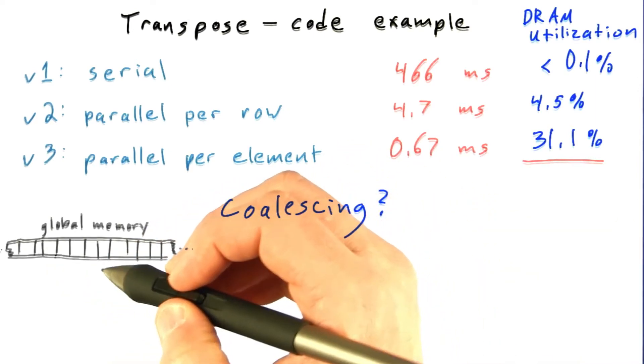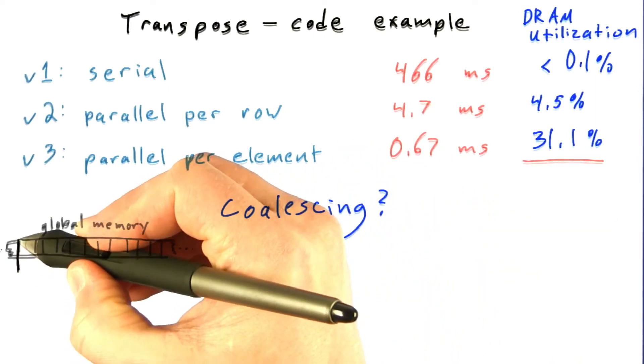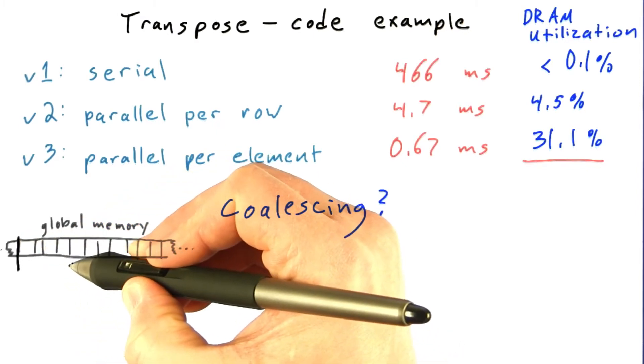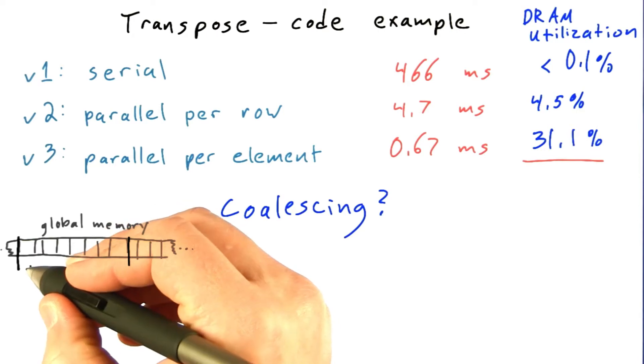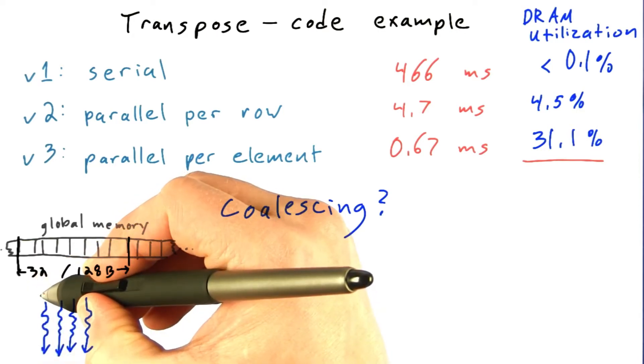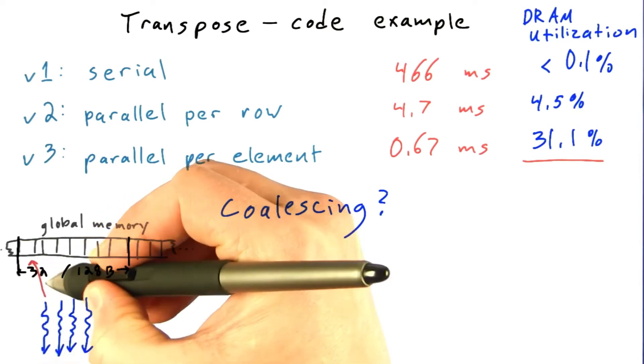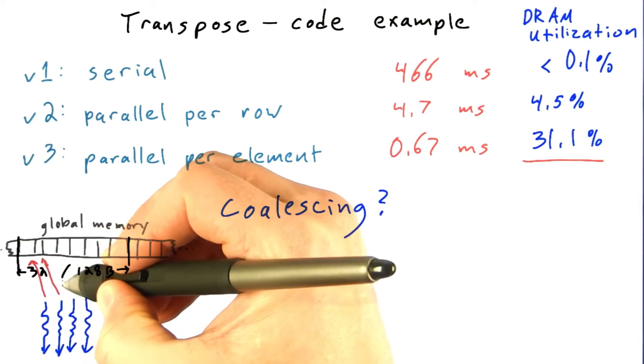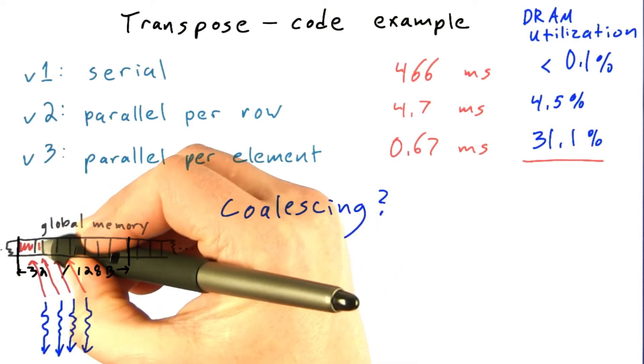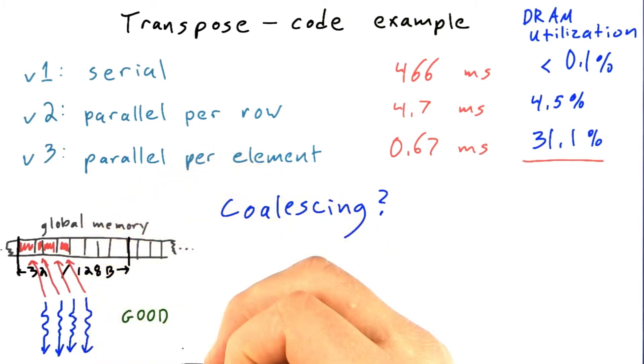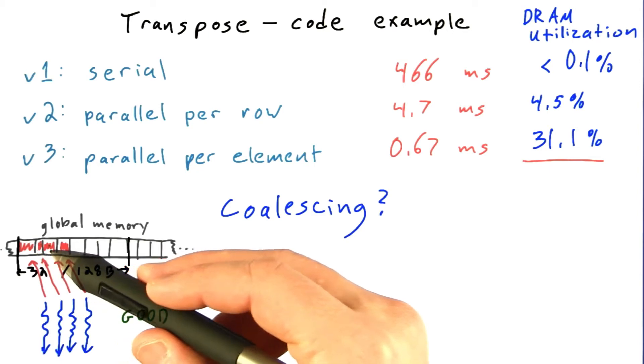The way to think about coalescing is that the GPU is always accessing global memory, accessing the DRAM, in pretty large chunks, 32 or 128 bytes at a time. And this means that we're going to need the fewest total memory transactions when the threads in a warp access contiguous adjacent memory locations. So this is an example of good coalescing. Every thread is either reading or writing in adjacent memory location.